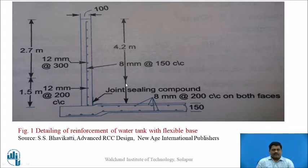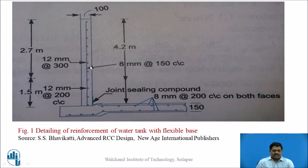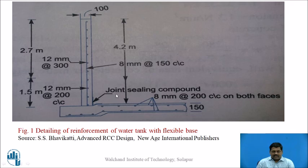Now for the detailing of the reinforcement of the water tank with flexible base: wall thickness is 100 mm. Reinforcement for the bottom 1.5 metres is 12 mm bars at 200 mm c/c, increased to 300 mm c/c above 1.5 m. Vertical steel is 8 mm bars at 150 mm c/c. The base slab is 150 mm thick with 8 mm bars at 200 mm c/c on both faces, top and bottom, in each direction. A joint sealing compound is used at the wall-base junction to allow lateral movement, making the base flexible.